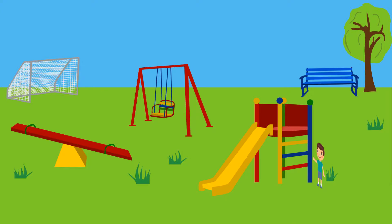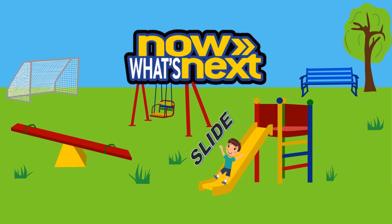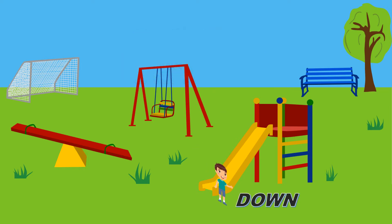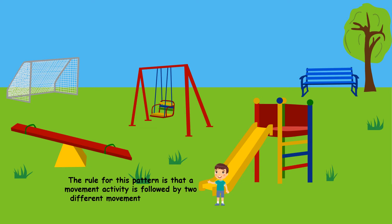It's time to play on the slide. A child goes up and then slides to go down. Up, slide, down. Up, slide, down. Up, slide. Now what's next? Yes, the child goes down. The rule for this pattern is that a movement activity is followed by two different movement activities. And then the pattern repeats.